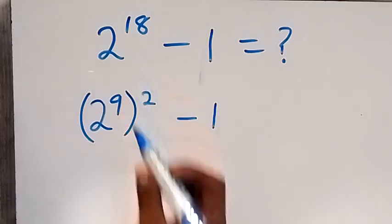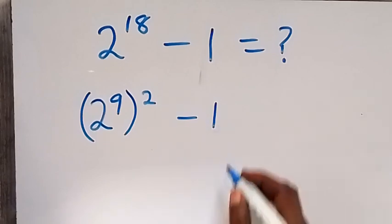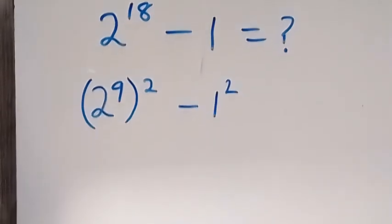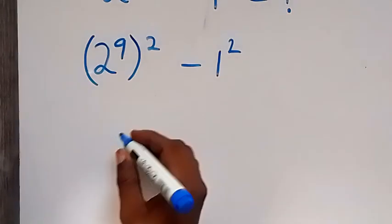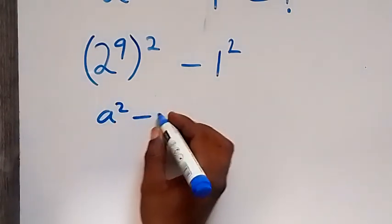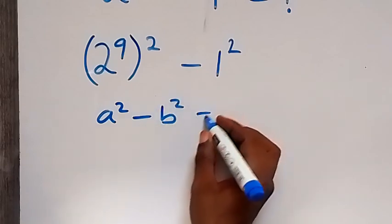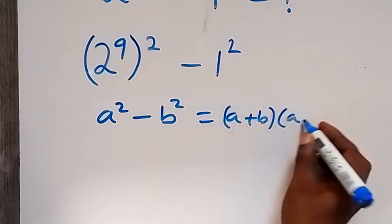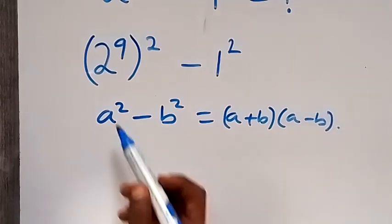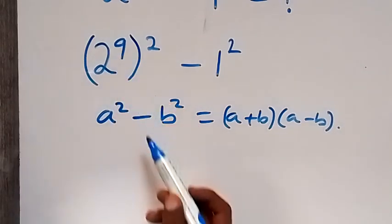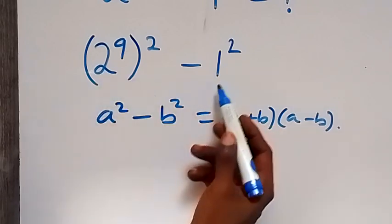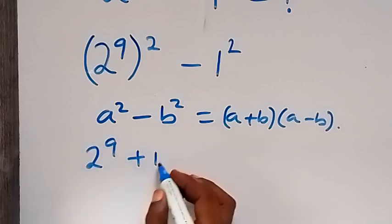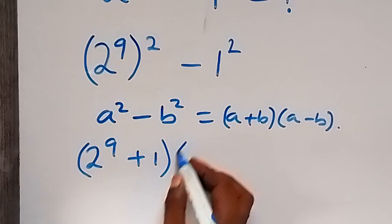And we can equally write 1 here as 1 squared. So this follows from the identity of difference of two squares. That is, when we have a squared minus b squared, we can write this as a plus b multiplied by a minus b. So in this case, a is standing as 2 raised to power 9, and b is standing as 1. So this expression becomes 2 raised to power 9 plus 1, then multiply by 2 raised to power 9 minus 1.